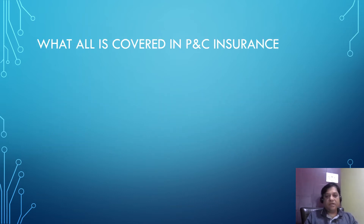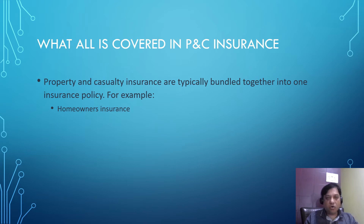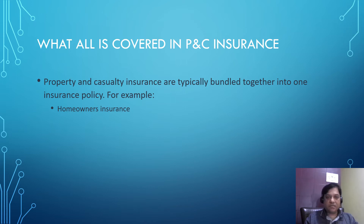What is covered in P&C insurance? P&C insurance is typically bundled in one policy. Homeowner's insurance helps protect your home and belongings against covered perils such as theft or fire. Homeowner's insurance policies typically include liability coverage, which may also help protect you if you're found legally responsible after someone is injured at your home or you cause damage to someone else's property.